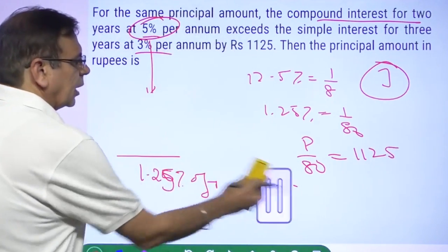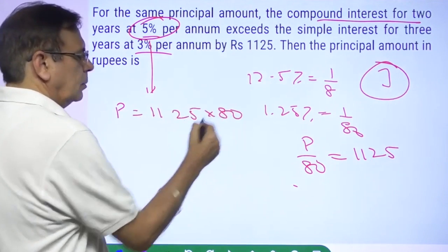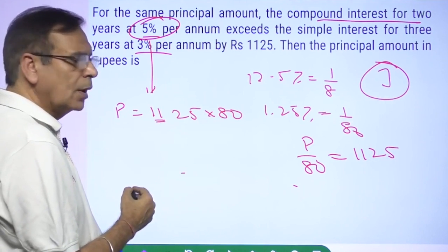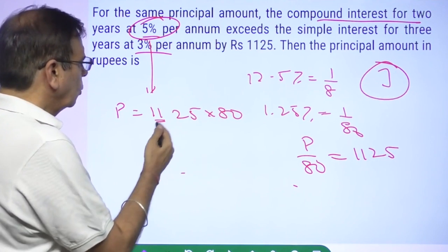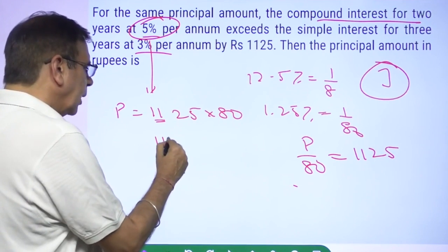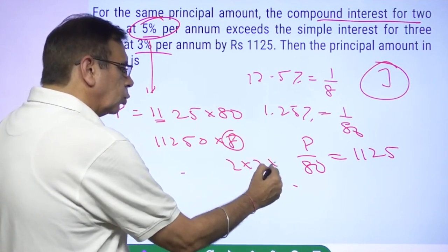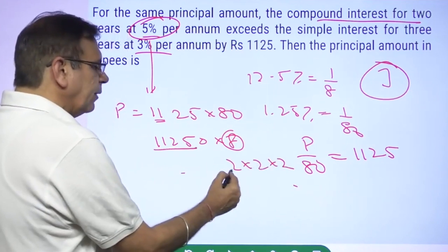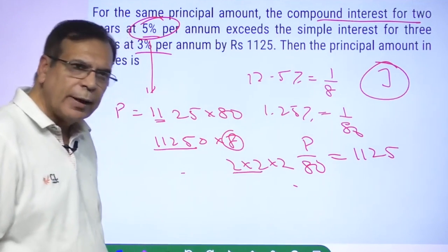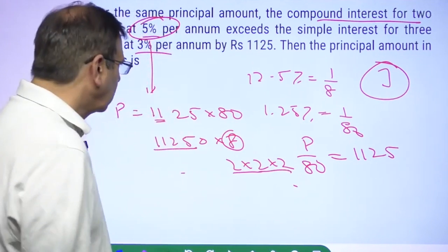Now let's come to the calculation aspect. Principal will be — can I say this is 1100 × 80? That's 88,000 plus 25 × 80. Or you could say 1125 × 8. What is 8? 2 × 2 × 2. So: 1125 × 2 = 2250; 2250 × 2 = 4500; 4500 × 2 = 9000. The principal is 9000.